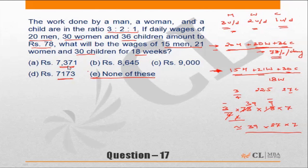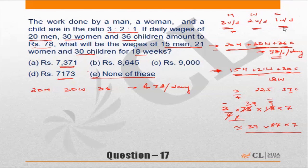Let's look at solving this by another method — the less time-consuming one first. Initially we have 20 men, 30 women, and 36 children with a salary bill of rupees 78 per day. A man does 3 units, a woman 2 units, and a child 1 unit of work per day. So 36 children are equivalent to 12 men (one-third ratio), and 30 women are equivalent to 20 men. So everything converts to: 20 plus 20 plus 12 equals 52 men.